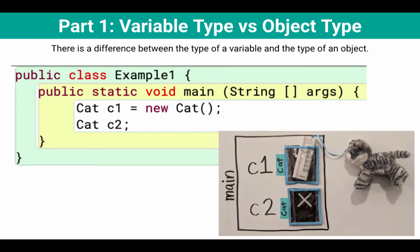So now let's go back over the learning goal. There's a difference between the type of a variable and the type of an object. So the type of the variable, that was things like cat c1. c1 was a variable of type cat. c2 was a variable of type cat.